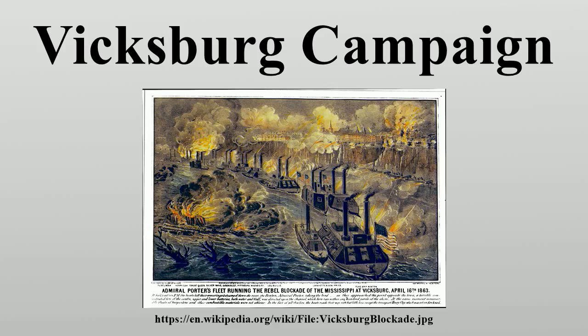Military historians divide the campaign into two formal phases: operations against Vicksburg and Grant's operations against Vicksburg. Grant initially planned a two-pronged approach in which half of his army, under Maj. Gen. William Tecumseh Sherman, would advance to the Yazoo River and attempt to reach Vicksburg from the northeast, while Grant took the remainder of the army down the Mississippi Central Railroad. Both of these initiatives failed. Grant then conducted a number of expeditions attempting to enable waterborne access to the Mississippi south of Vicksburg's artillery batteries, and all five of these initiatives failed as well.